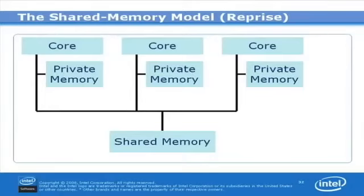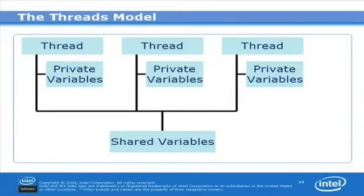If you remember back to the beginning of this module, we had a model of our multi-core processor, where we had several cores, each with private memory, and each of those cores having access to shared memory. We can take that same model and now make a threading model that corresponds to it.